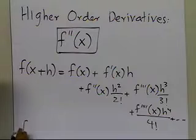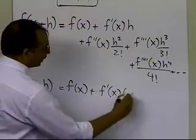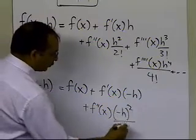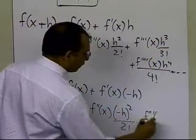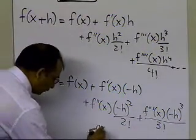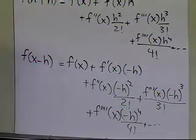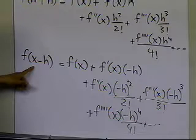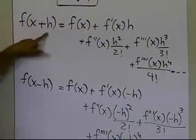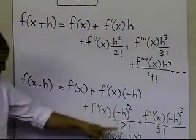Now, instead of h, I put x minus h, and I'll get f of x minus h equals f of x plus f prime of x times minus h, plus f double prime of x times minus h squared divided by 2 factorial, plus f triple prime of x times minus h cubed divided by 3 factorial, plus f fourth derivative of x times minus h raised to the power of 4 divided by 4 factorial, and so on. The only difference is that instead of h, I have substituted minus h.